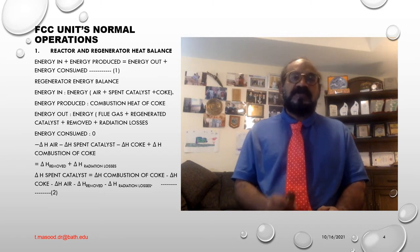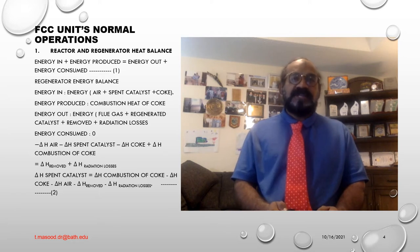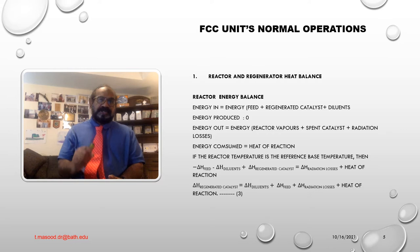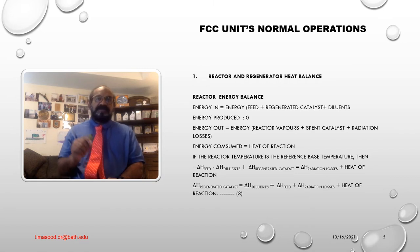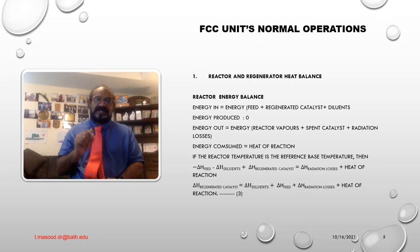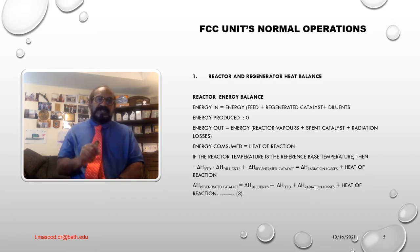Delta H denotes the differential of heat being produced or consumed. Reactor energy balance: energy in is equal to energy feed plus regenerated catalyst plus diluents. Number two: energy produced is equal to zero. Energy out is equal to energy reactor vapours plus spent catalyst plus radiation losses. Number four: energy consumed is equal to heat of reaction. If the reactor temperature is the reference temperature, then: minus delta H feed, minus delta H diluents, plus delta H regenerated catalyst, is equal to delta H radiation losses plus heat of reaction. Or in other form: delta H regenerated catalyst is equal to delta H feed plus delta H diluents plus delta H radiation losses plus heat of reaction. That is equation number three.